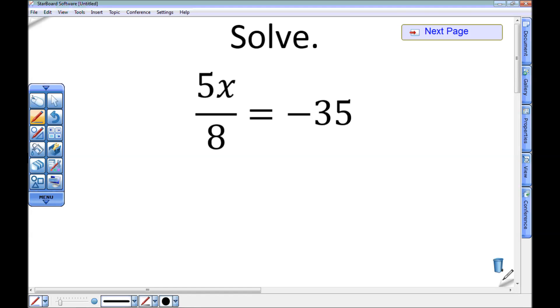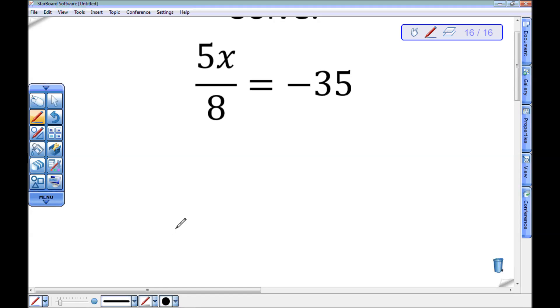One more here. I've got 5x divided by 8 equals negative 35. Now there are two ways to solve this one. I'm going to take the easy way out first, which is actually harder arithmetic-wise, and then I'll do the harder but easier arithmetic way second. Well, I want to get that x by itself. I sure wish this wasn't divided by 8, so I could multiply both sides by 8.